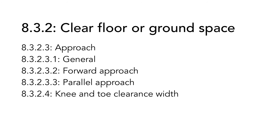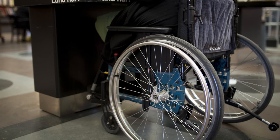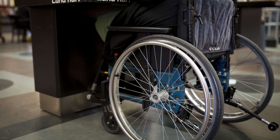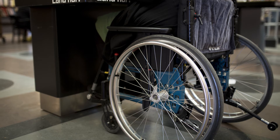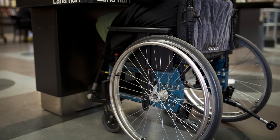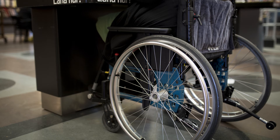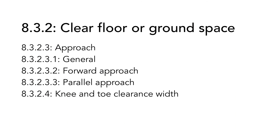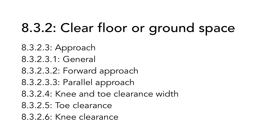The next part has to do with knee and toe clearance width. This is important for users in a wheelchair. Since most ICT needs to be operated with the help of the hands, it is important that the wheelchair user can get close to the ICT without hurting his or her toes or knees. There are specific minimum requirements for both knee and toe clearance in the standard, making it possible for the user in a wheelchair to come close to the operable parts of the ICT.